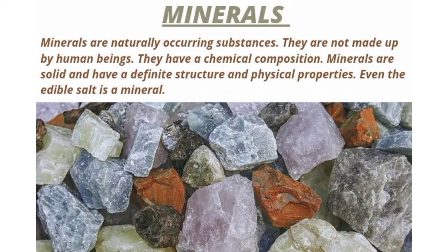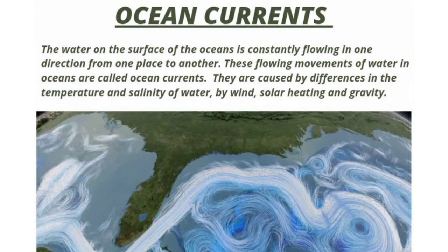Ocean currents. The water on the surface of the ocean is constantly flowing in one direction from one place to another. These flowing movements of water in the ocean are called ocean currents. They are caused by difference in the temperature and salinity of water, by wind, solar heating and gravity.